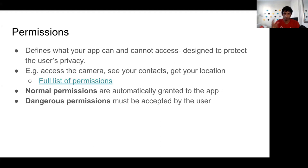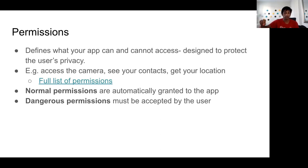An example of a normal permission we've already used is internet access — every time we fetch data or download an image with Picasso, that uses the internet permission and we don't need to show a dialogue to the user. Dangerous permissions include things like getting the user's location or reading all contacts on the phone. For those, you need to explicitly get the user's permission.